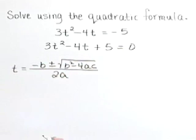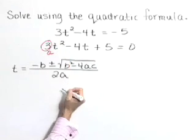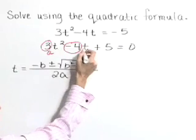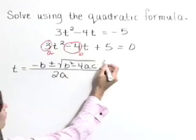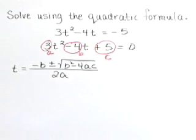In our equation, let's identify a, b, and c. a is our coefficient of t squared. It is 3. b is the coefficient of our t term. It's negative 4. And c is this number by itself. It's positive 5.